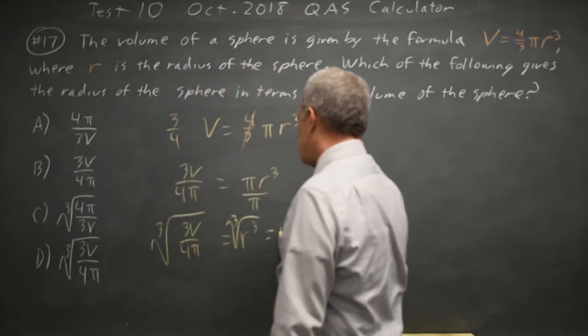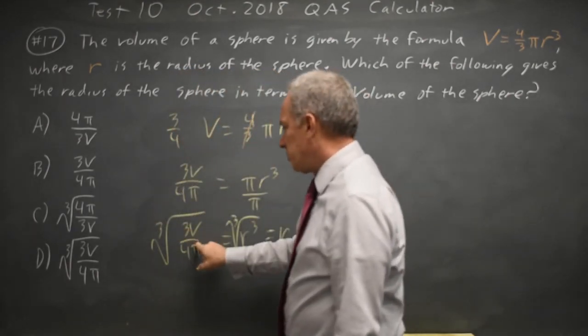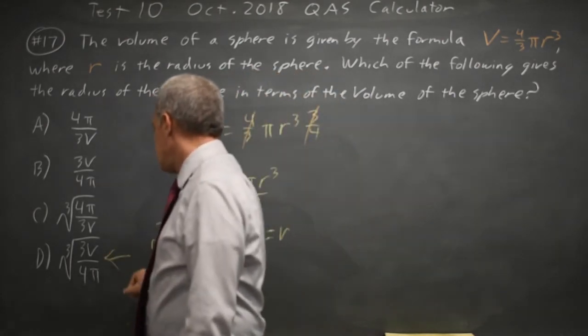Cube root of r cubed is r, so r equals cube root of 3v over 4 pi, choice D.